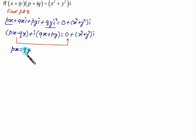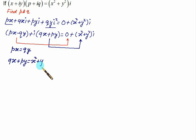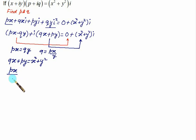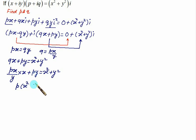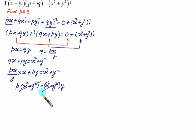Equating imaginary parts: qx + py = x² + y². From the real part equation, q = px/y. Substituting into the imaginary equation: (px/y)·x + py = x² + y². Taking p common and cross-multiplying by y: p(x² + y²) = (x² + y²)y, so x² + y² cancels on both sides and p = y. Substituting back, q = x.